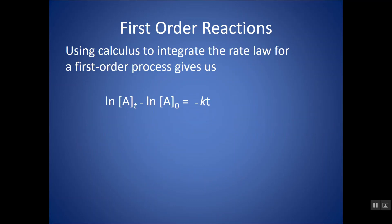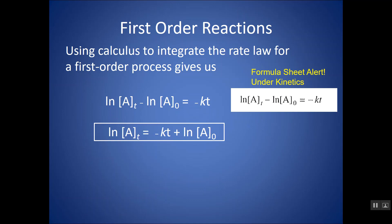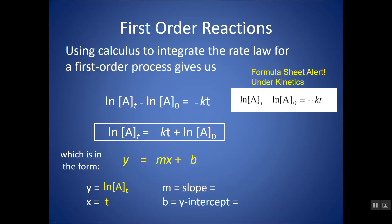If I do the same thing with my first-order integrated rate law, I get something that looks like this. This is how it appears on the AP formula sheet under kinetics. It's not quite yet in Y equals MX plus B format, but with a little bit of a nudge of bringing this term to the other side, here it is in Y equals MX plus B format. If I graph the natural log of the concentration at a certain time versus time and I get a straight line, then that is first-order with respect to reactant A. The slope gives me negative K again.